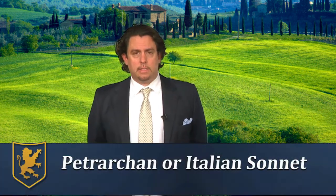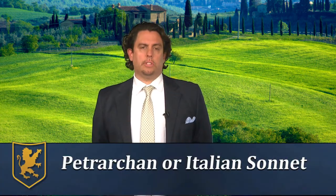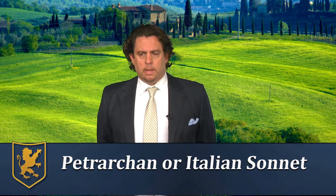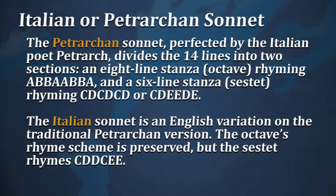We start first with the Italian sonnet, also known as the Petrarchan sonnet. This type of sonnet was perfected by an Italian poet by the name of Petrarch, and it divides the 14 lines of the sonnet into two sections.